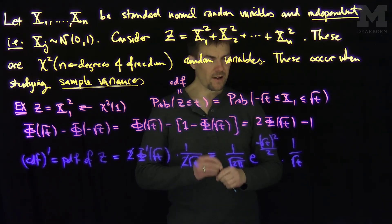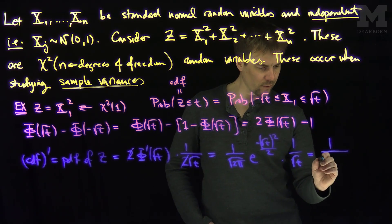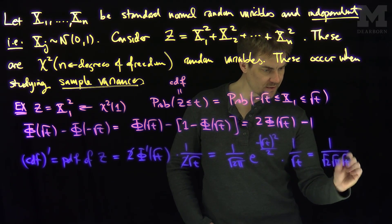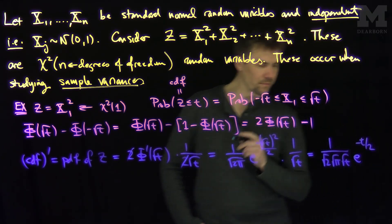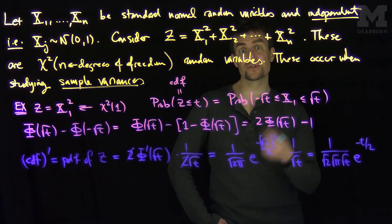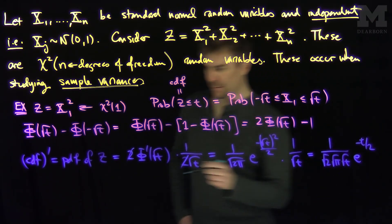And so, what we have here is this distribution. The distribution is one over the square root of two times the square root of pi times the square root of t, e to the negative t over two. And now, this turns out to be a member of a special class of distributions, gamma distributions. So what this is is gamma.